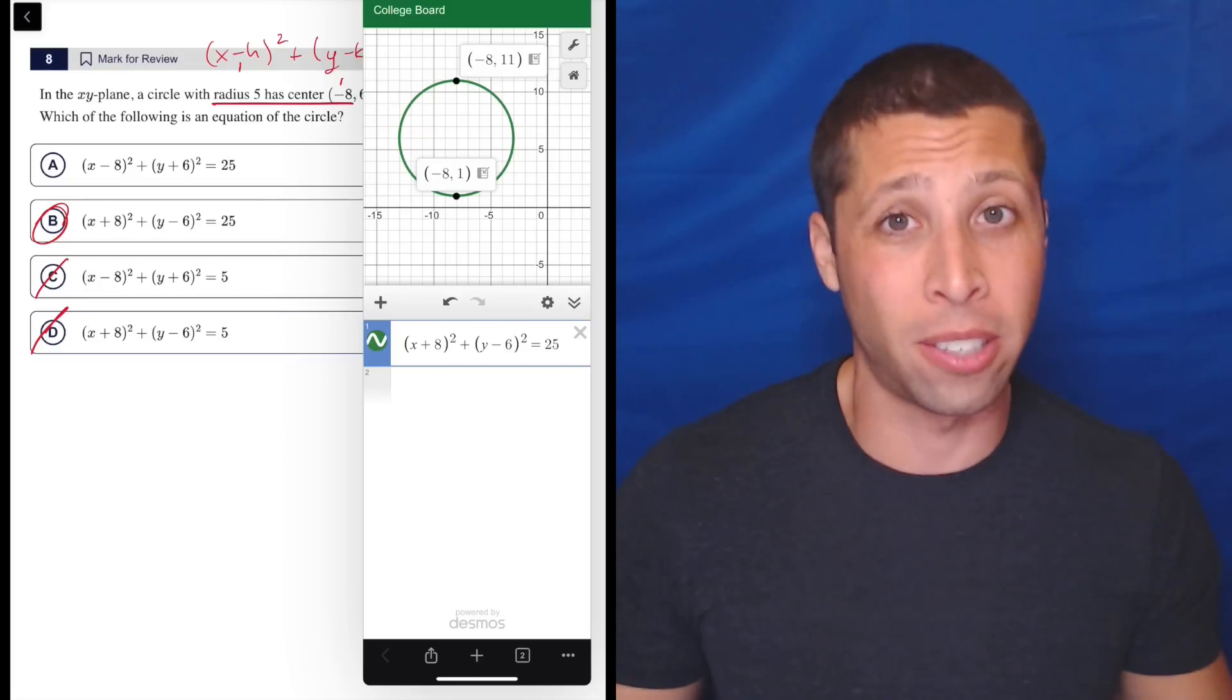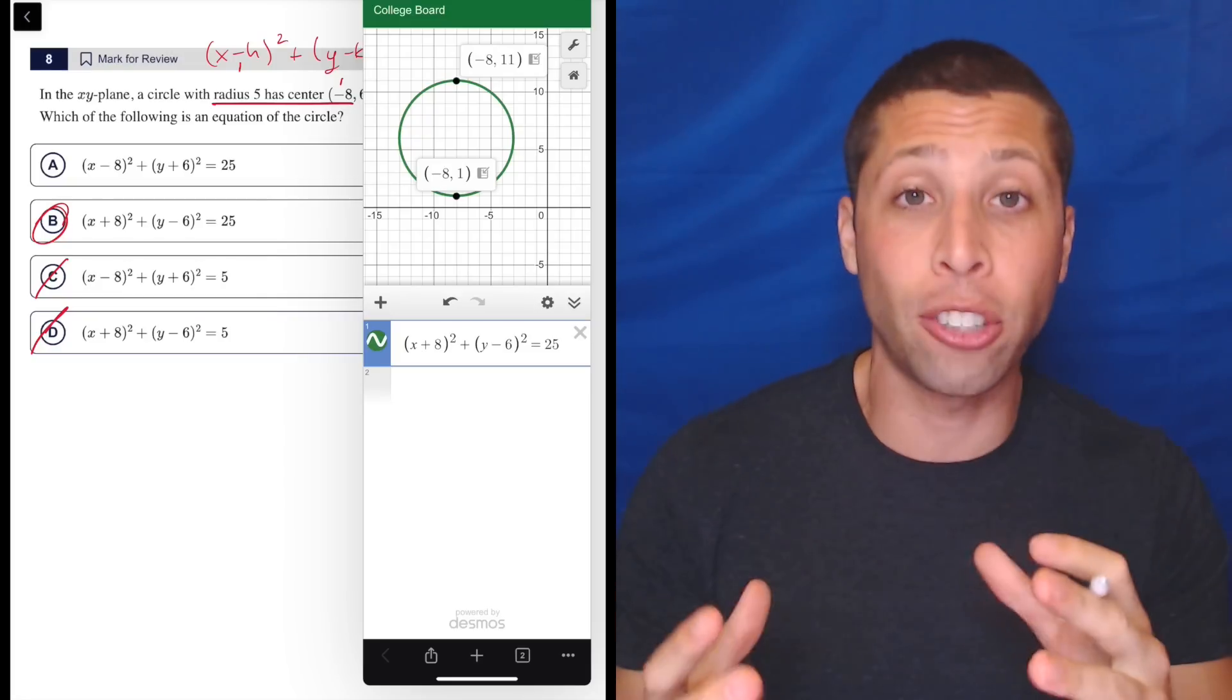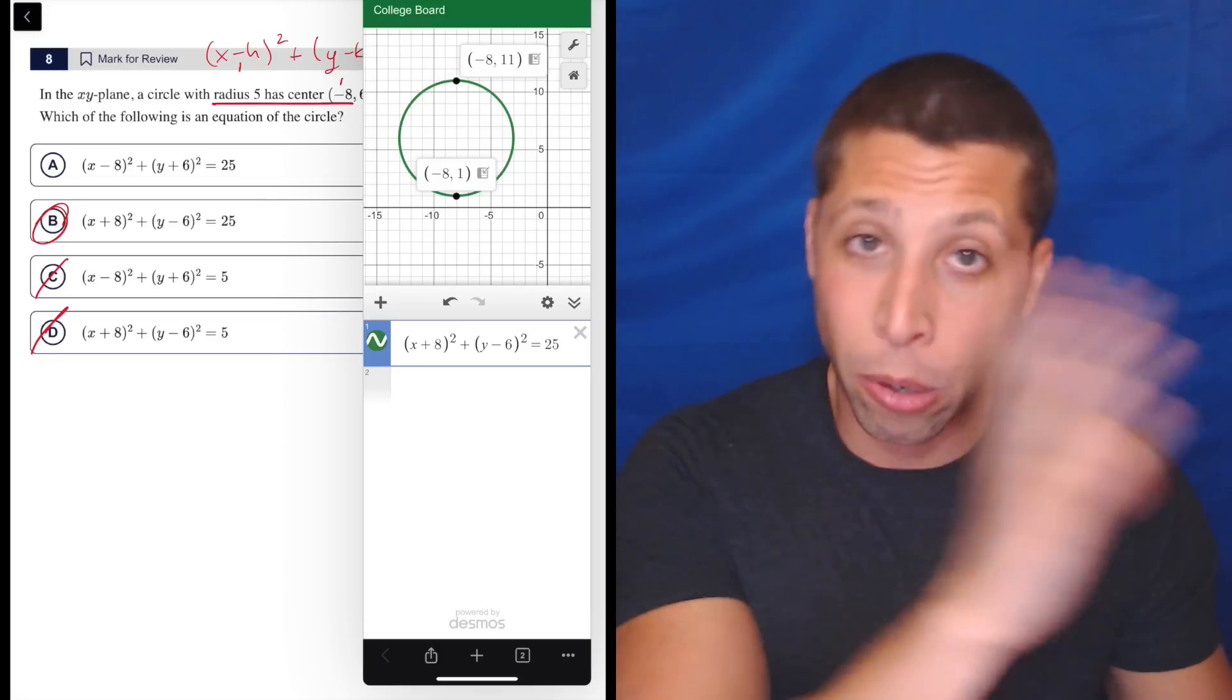So these are the ones to save the points on first. If you're constantly making mistakes on stuff in the middle of the sections, then you're wasting points. Focus on that first, then worry about the hard ones later.